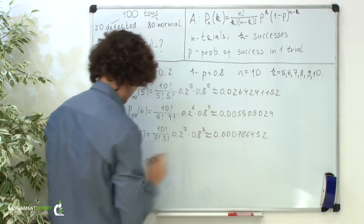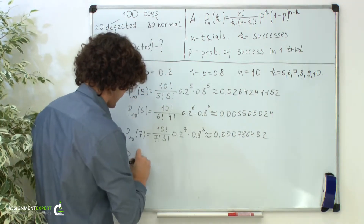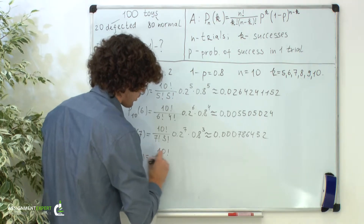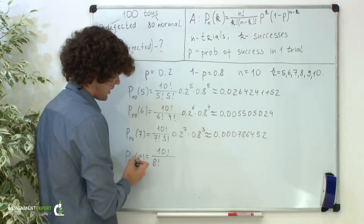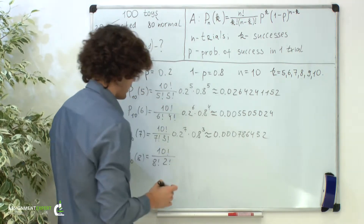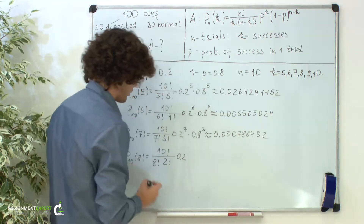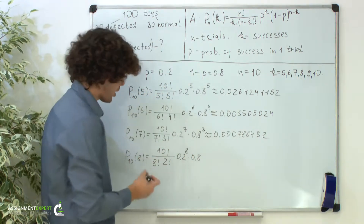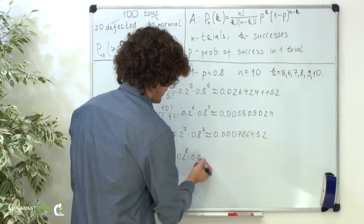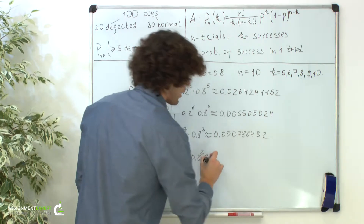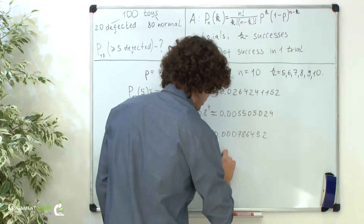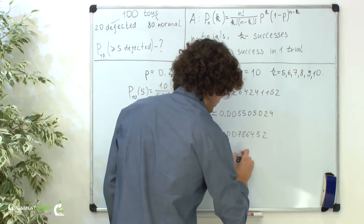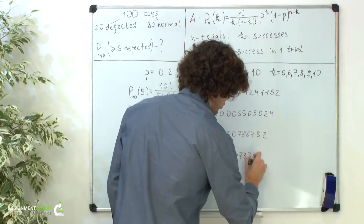Now the case when k is 8: the probability of 8 successes out of 10 trials equals 10 factorial over 8 factorial times (10 minus 8), which is 2 factorial, times 0.2 raised to the eighth power, times 0.8 raised to the power of 10 minus 8, so 0.8 squared. This is approximately 0.000073728.